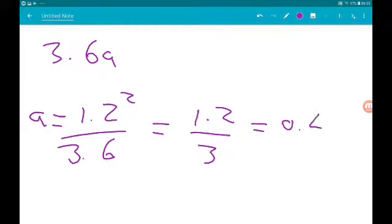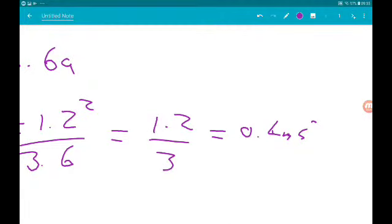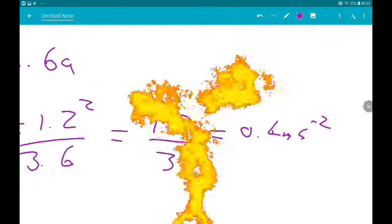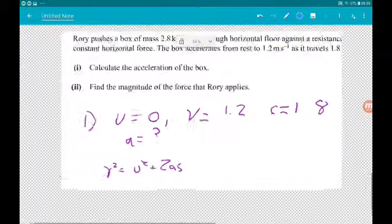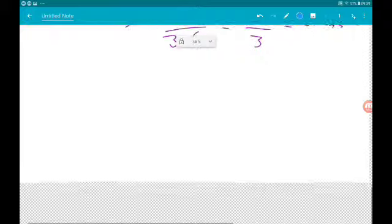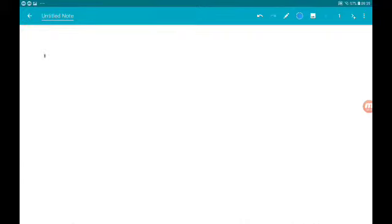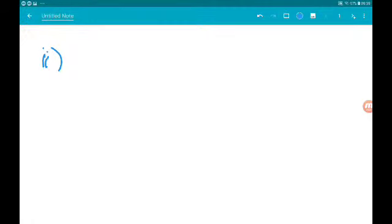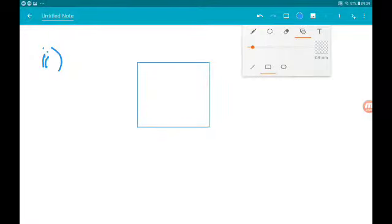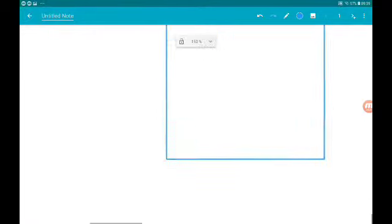Then part two, another two marks, wants us to find the magnitude of the force that Rory applies. So let's do a little sketch. There's our box, let's attempt to draw Rory.